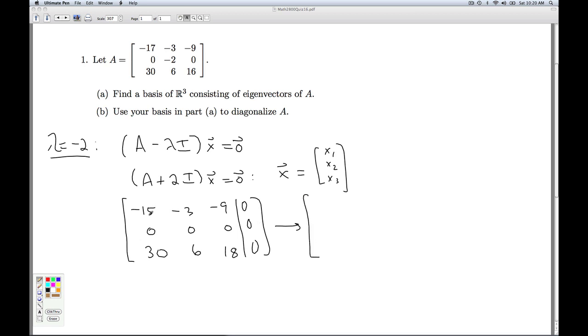We put this in row echelon form. I can divide this by negative fifteen. I get one, one fifth, three fifths, zero, zero, zero. I get a row of zeros there, and it's clear if I multiply by two and add that that's going to zero that out as well. So we got two rows of zeros here. That means we're going to have two free variables, which is good.